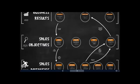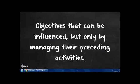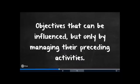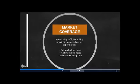The next layer of data was known as sales objectives. These were described as objectives that can be influenced but only by managing their preceding activities that we have just looked at. One of these objectives was market coverage, which could be described as maintaining sufficient selling capacity to pursue all desired opportunities. This could include metrics such as number of total selling hours, percentage of customers called and percentage of customer facing time.